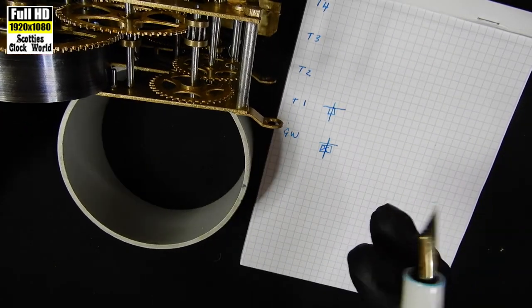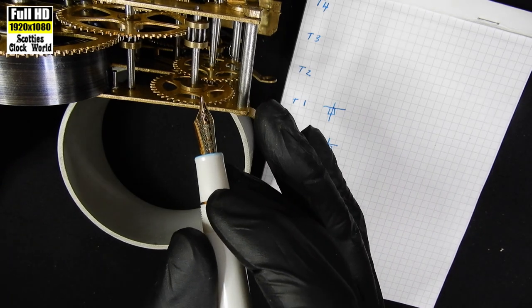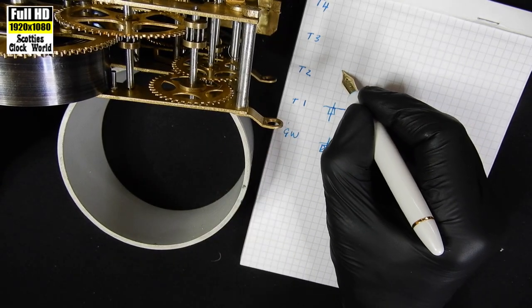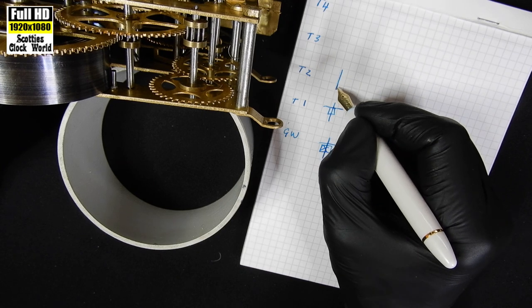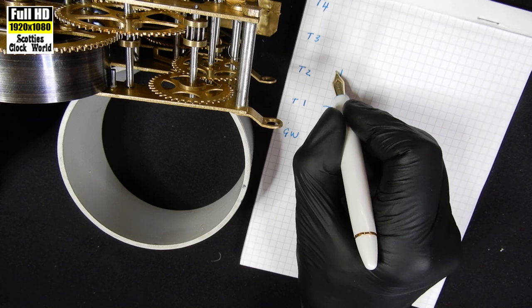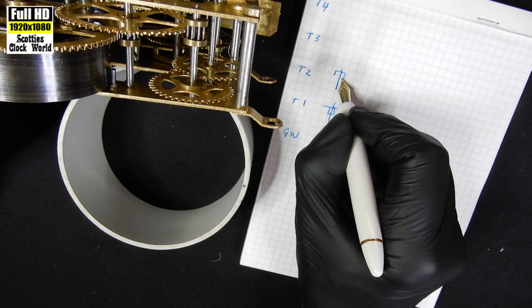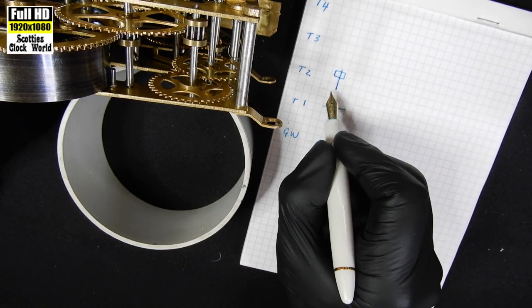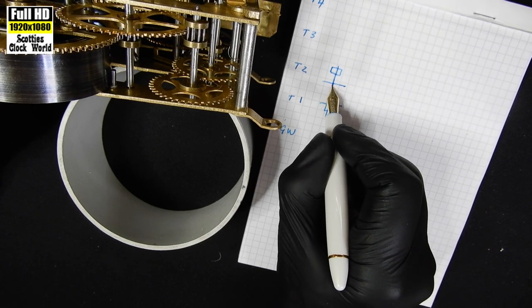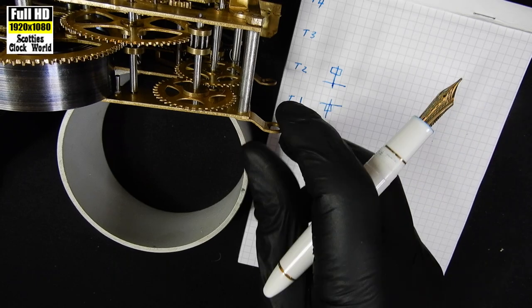Now we look at the second wheel, this one here. We draw the arbor. Then at the top this time we have the pinion, the little box there and the wheel is down at the bottom. That's the second wheel.